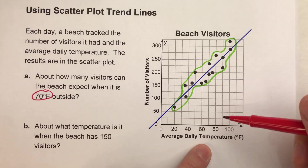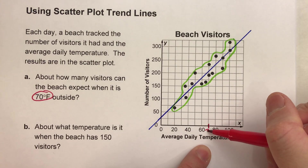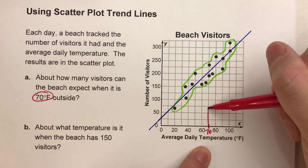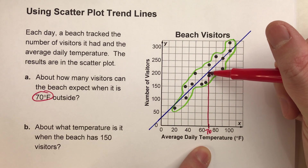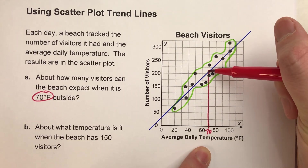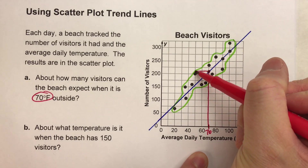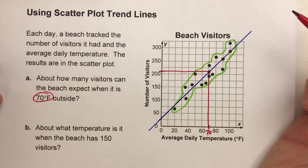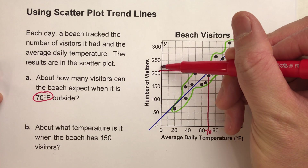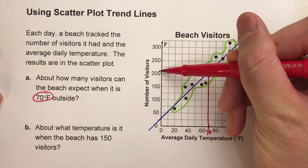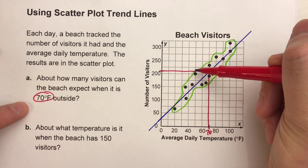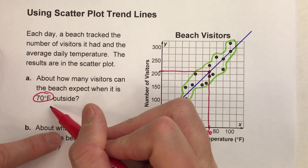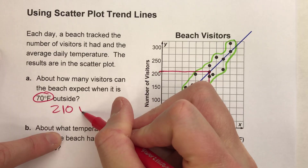On my graph, here is 70 degrees Fahrenheit. What I'm going to do is go up from 70 degrees all the way until I hit my trend line, and then go over and estimate the best I can. This is 200, that's 225 — we could say that's about 210, maybe a little less. So we could say about 210 visitors.